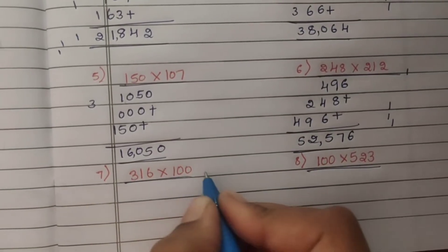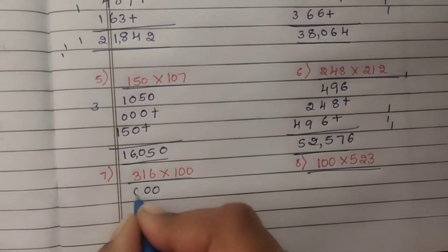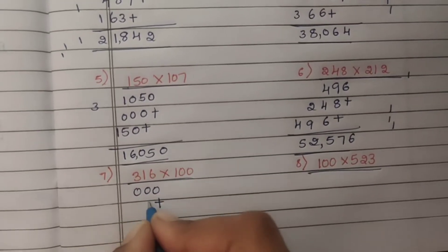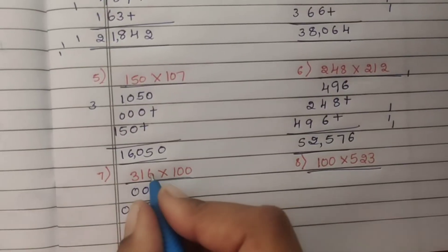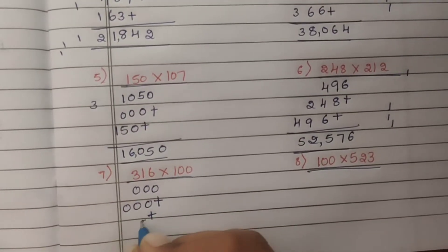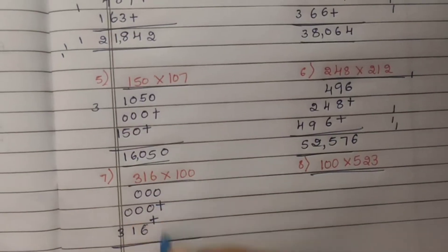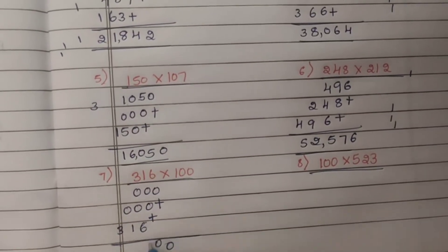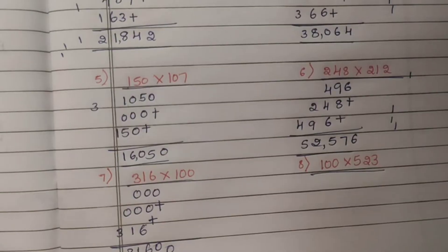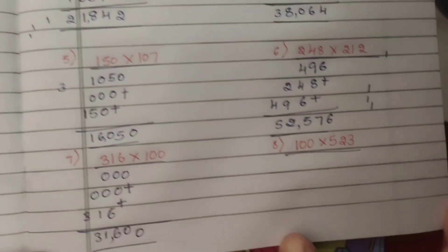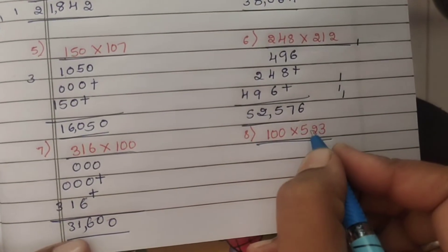Seventh problem: 316 into 100. 0 times any number is 0, so we get zeros. 1 times 6 is 6, 1 times 1 is 1, 1 times 3 is 3. So the answer is 31,600.